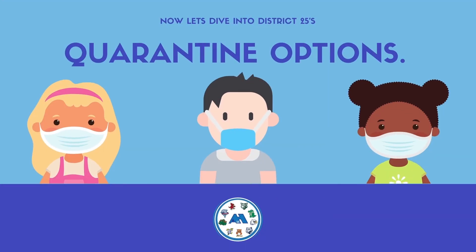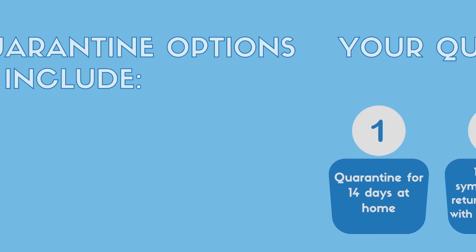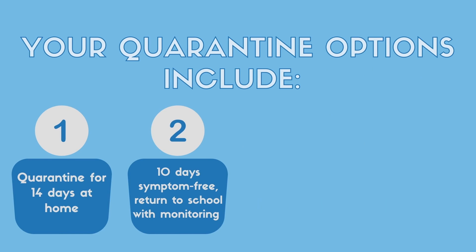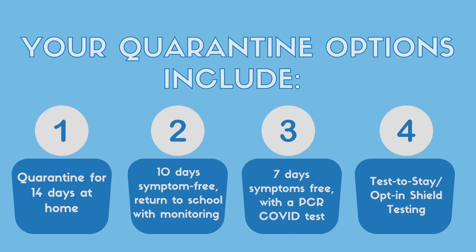Now let's dive into District 25's four quarantine options. There are four options for a close contact's quarantine. Option one: your child will quarantine for 14 days at home. Option two: your child will quarantine for 10 days with an option to come back to school on day 11 if they are symptom-free. Option three: your child will quarantine for seven days with an option to come back on day eight with a negative COVID-19 test. Option four: your child would test to stay in school, not needing to quarantine — we will dive into the details of that option later.